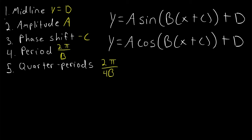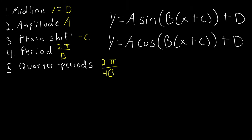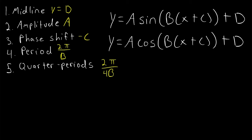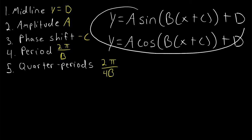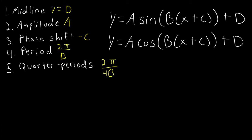We'll work through these examples by first finding the midline, which is y equals d if our functions are written in this form. Then we find the amplitude, which is a. Then we find the phase shift, which is negative c. And then the period, which is 2 pi over b, and then the quarter periods.